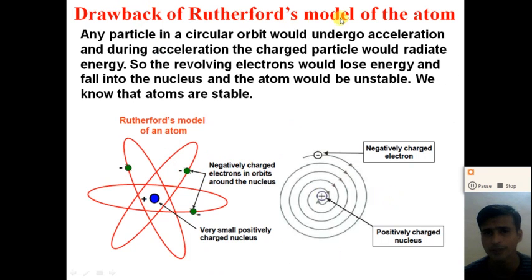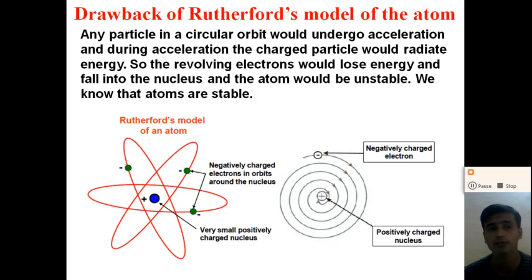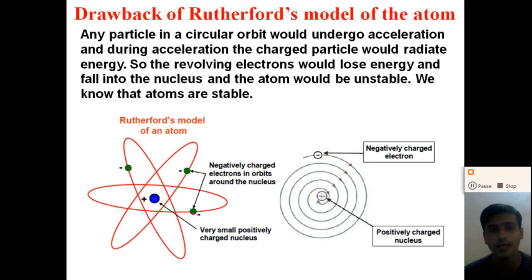Now, some drawbacks of Rutherford's model of an atom. According to Rutherford's model, negatively charged electrons are revolving around the nucleus in a circular orbit. But any particle in a circular orbit would undergo oscillation. During oscillation, this charged particle would radiate energy continuously. When the electron revolves in a circular orbit, the electron undergoes oscillatory motion and the oscillating electron radiates energy continuously. But we know that atoms are stable.